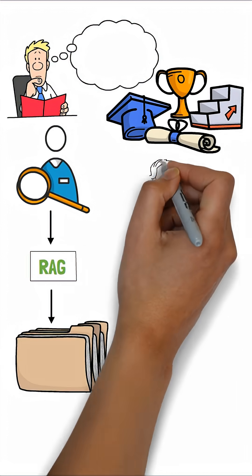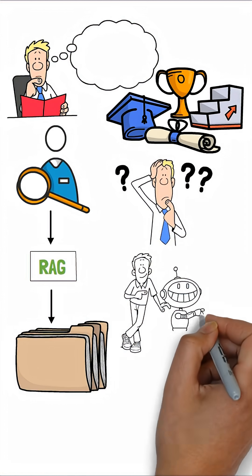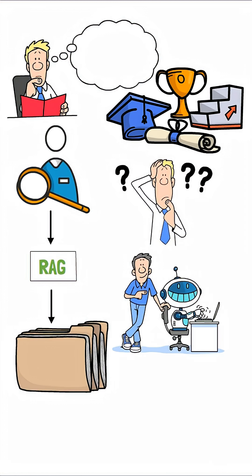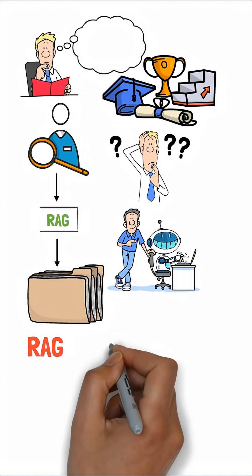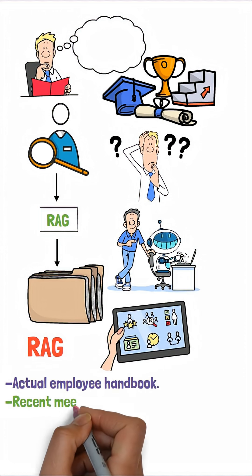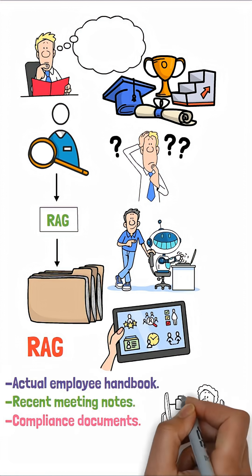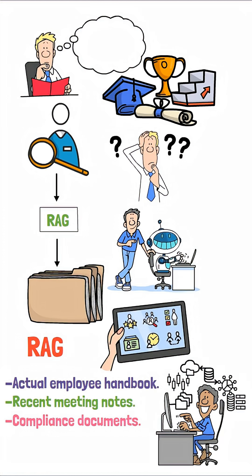Let's say you need to answer a question about your company's policies. Without RAG, an AI might give you generic HR advice, but with RAG, the system first searches your actual employee handbook, recent meeting notes, and compliance documents. Then it generates a response specifically referencing your company's actual protocols and recent decisions.